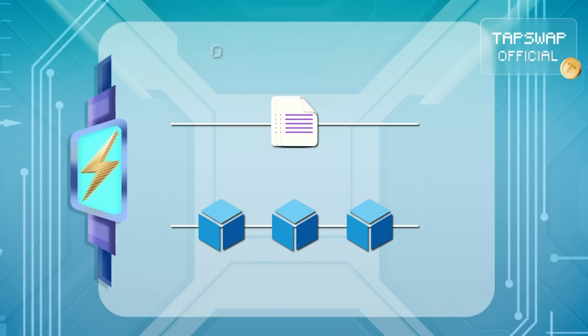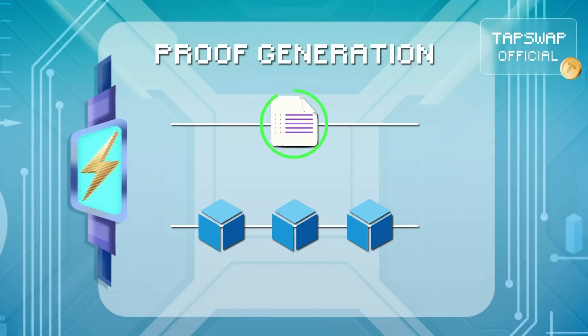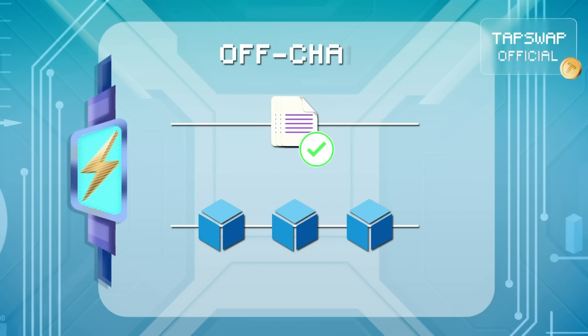Then it's time for proof generation. For each transaction batch, a validity proof — which mathematically confirms that all transactions were valid — is created off-chain.